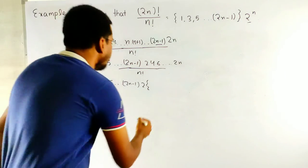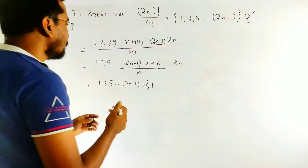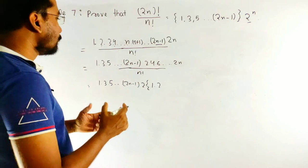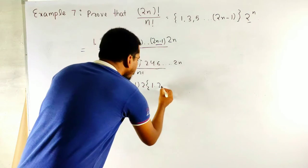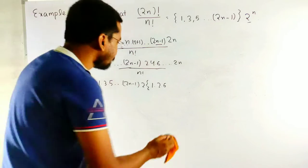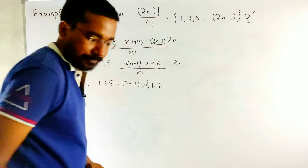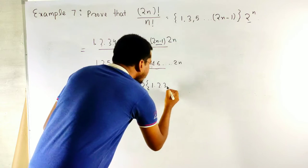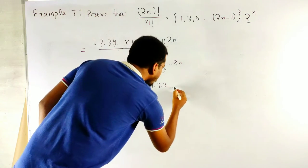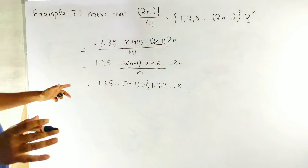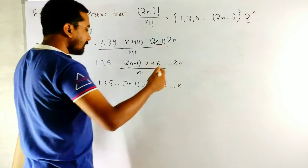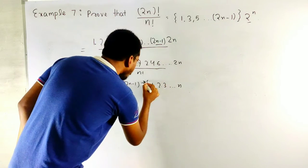From 2, I will take 1. From 4, I will take 2. Remaining 2, 6 by 2, 3. Sorry. 6 by 2, 3 and now, up to n. n by 2, up to n. How many 2 I have taken from this term? n, n 2. 2 to the power n.